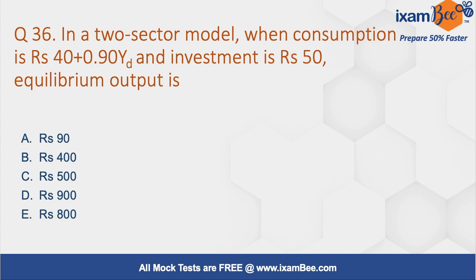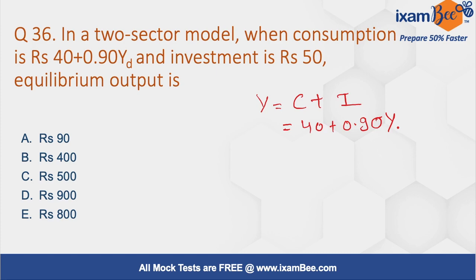Question number 36. We are given the consumption and the investment, and we have to find the equilibrium level of output. We know that output equals consumption plus investment. The consumption function is 40 plus 0.9 Y_D and investment is 50, so it will be 90 plus 0.9 Y_D.